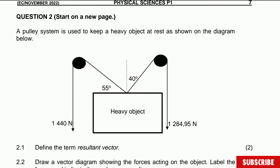This question is about a pulley system, coming from November 2022 in the Eastern Cape Province. A pulley system is used to keep a heavy object at rest as shown in the diagram below. An important thing here is that the object is at rest, therefore the system is at equilibrium — and that is a very important point.